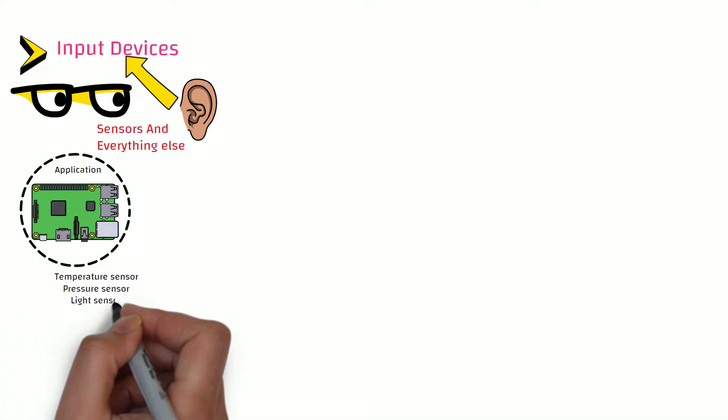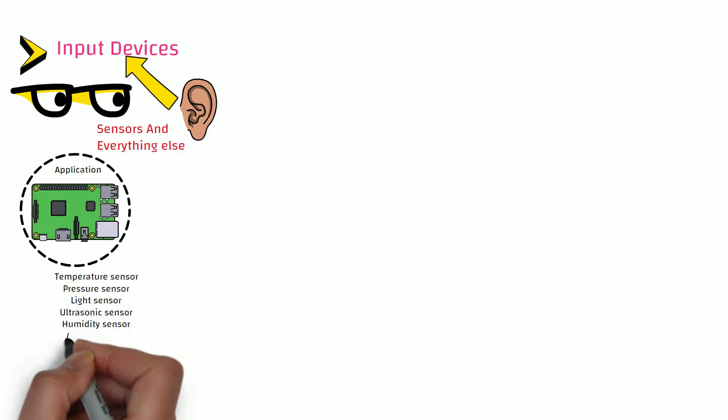The following are some examples of the sensors used in embedded systems: temperature sensor, pressure sensor, light sensor, ultrasonic sensor, humidity sensor, accelerometer, gyroscope, magnetometer, or compass.